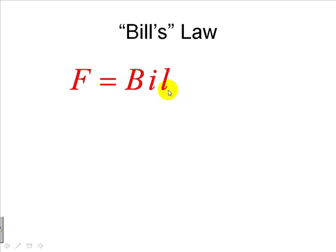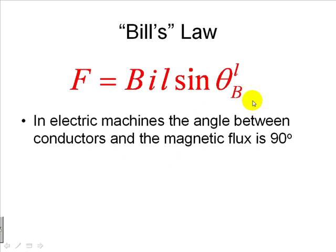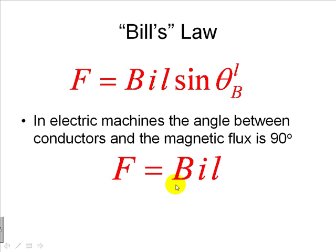But we remember there was a fourth factor: the sine of a certain angle — the angle between the current and the magnetic field. That was the complete expression for the force applied by the magnetic field on the conductor carrying a current. However, by design in electric machines, that angle is always 90 degrees. The sine is 1, and the expression simplifies to just F = B·I·L. And now you know why we use the mnemonic of Bill's force.